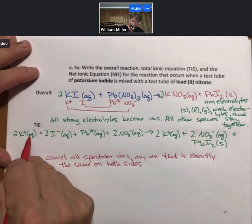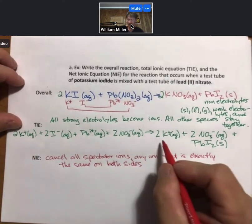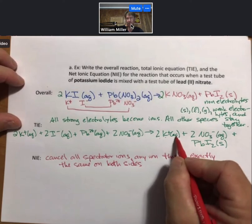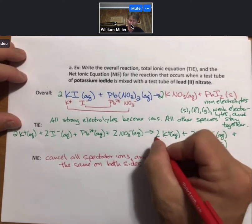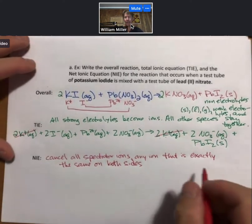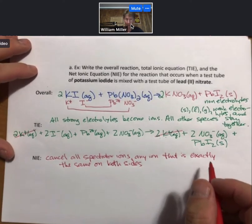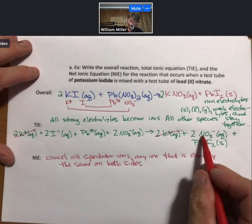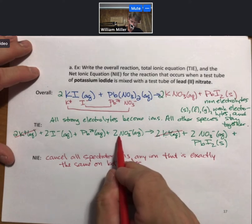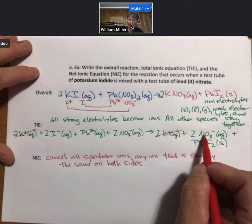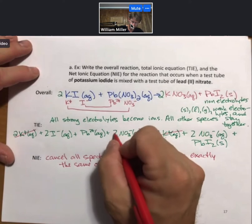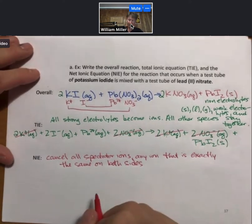I see 2K plus aqueous on the reactant side. I see 2K plus aqueous on the product side. Those two things are the same. They will get canceled out and they will not get written in the net ionic equation. I have two nitrates on the product side. I have two nitrates on the reactant side. Cancel those out.